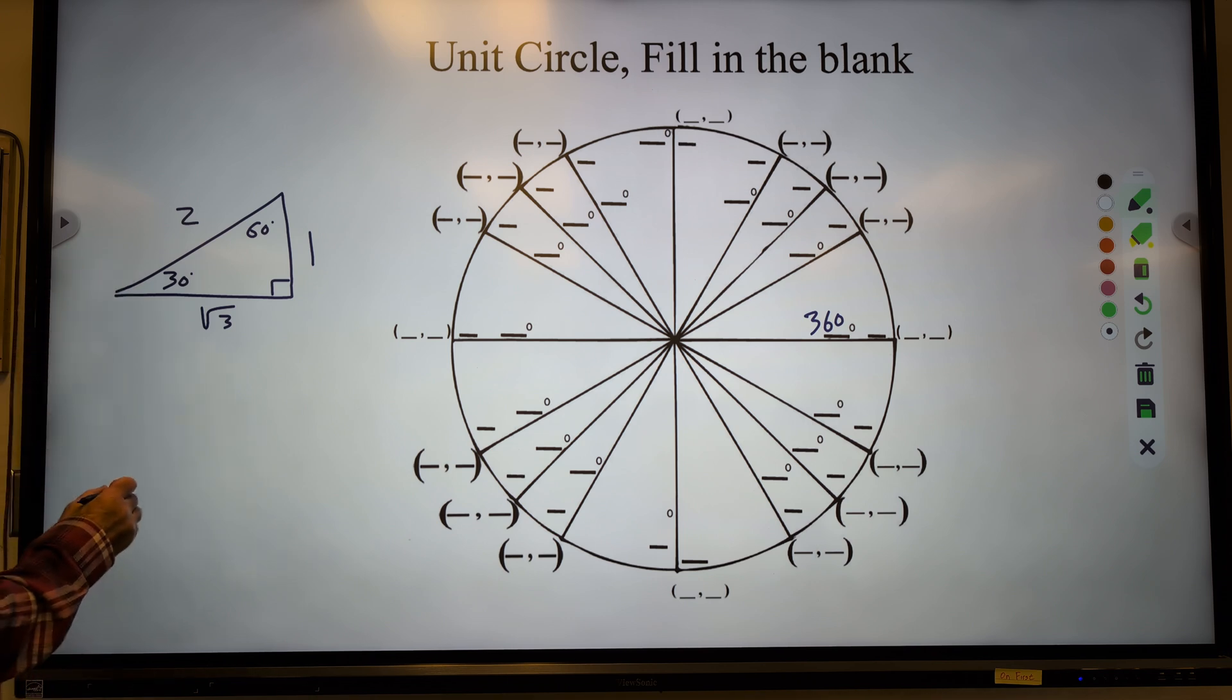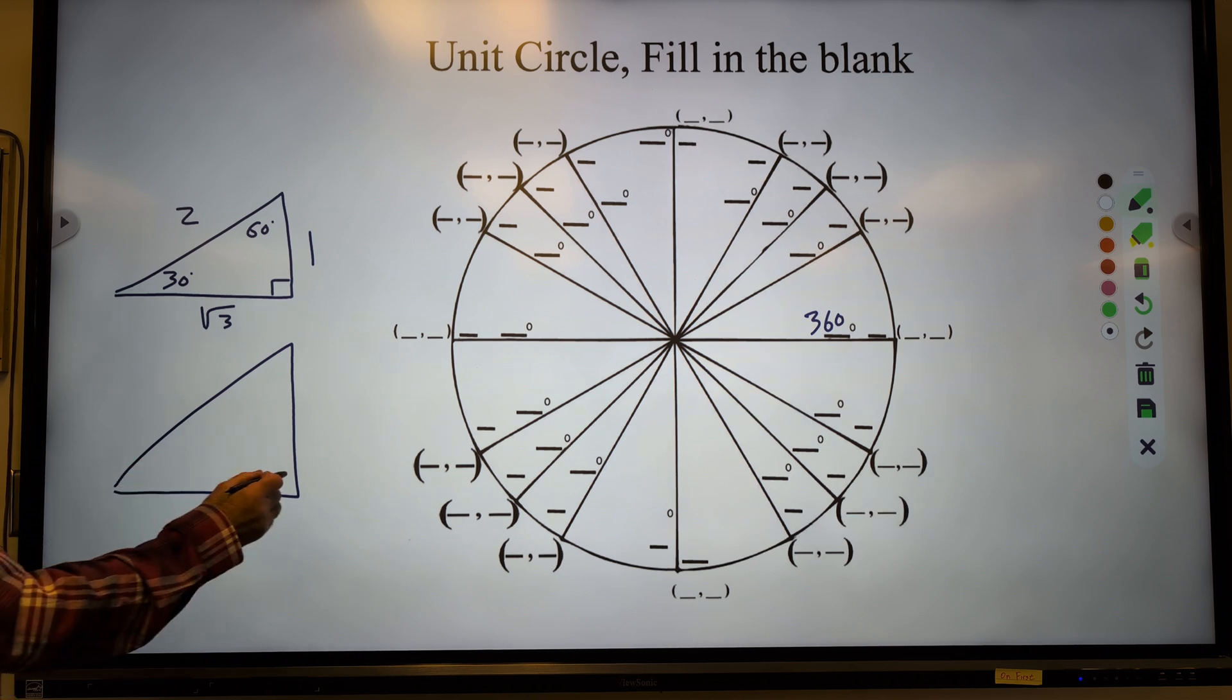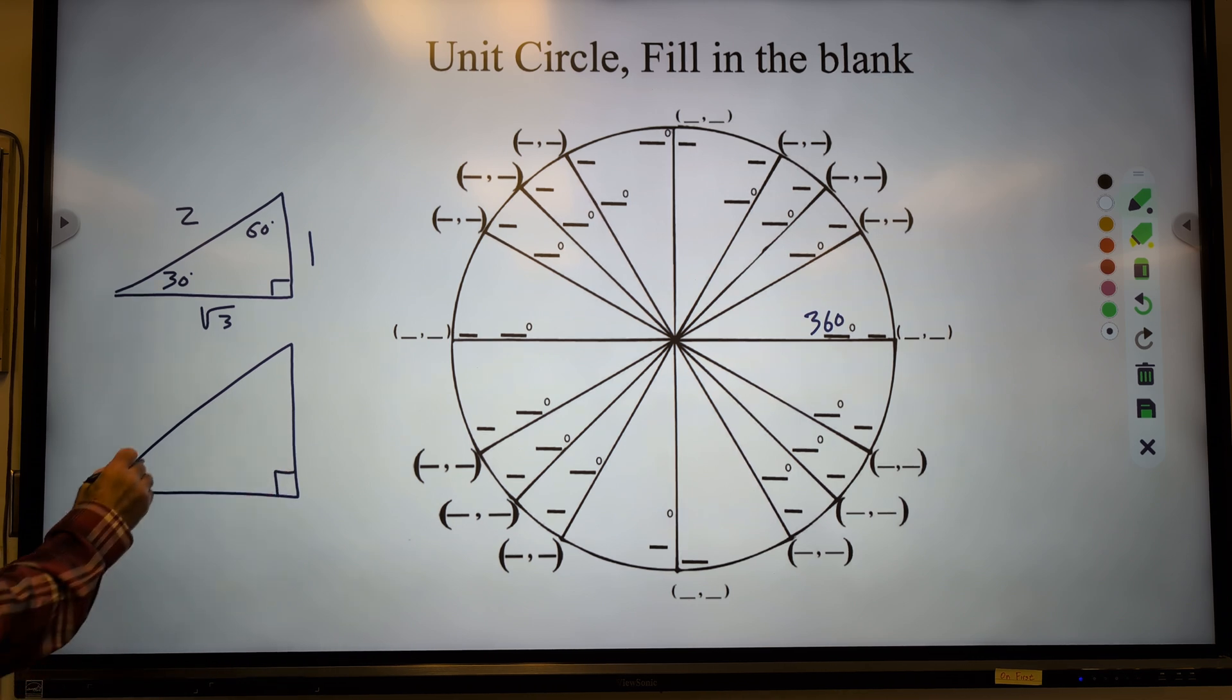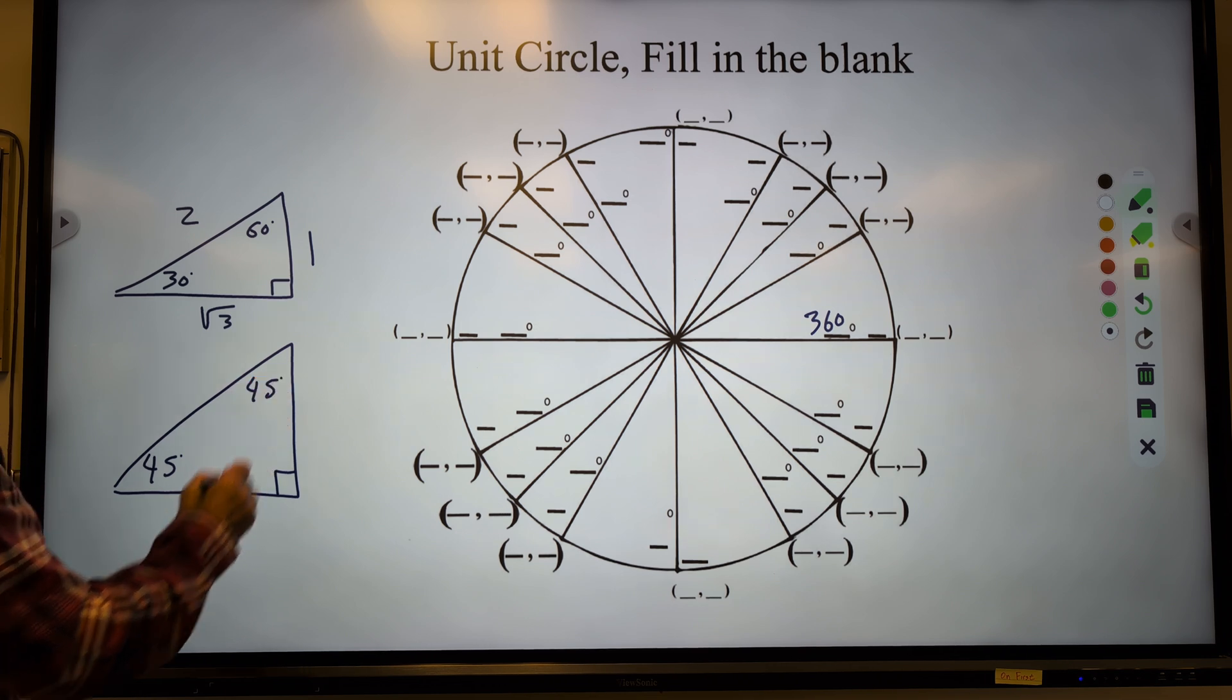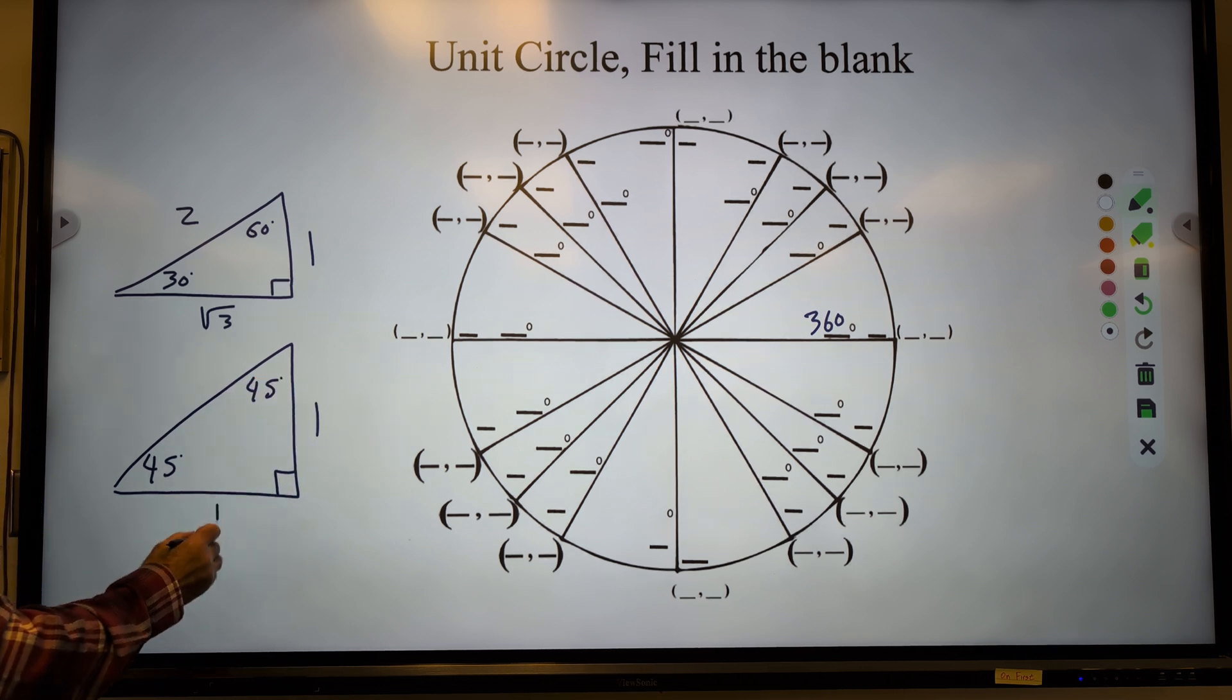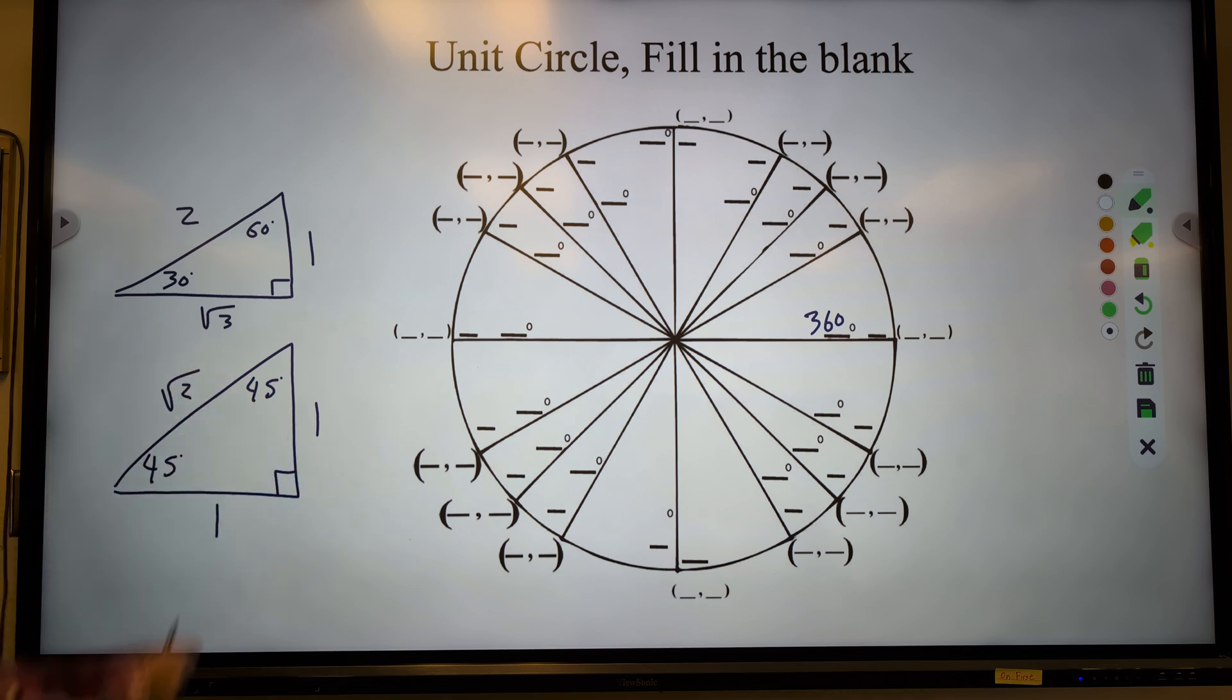The second triangle is an isosceles right triangle where both the angles are 45. And the ratios of sides are 1, 1, root 2. This could be a million, a million, root 2. They are ratios of sides.